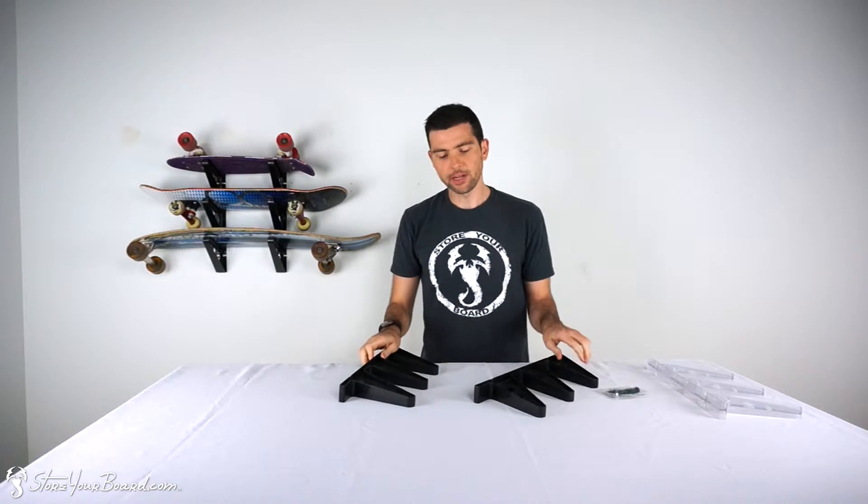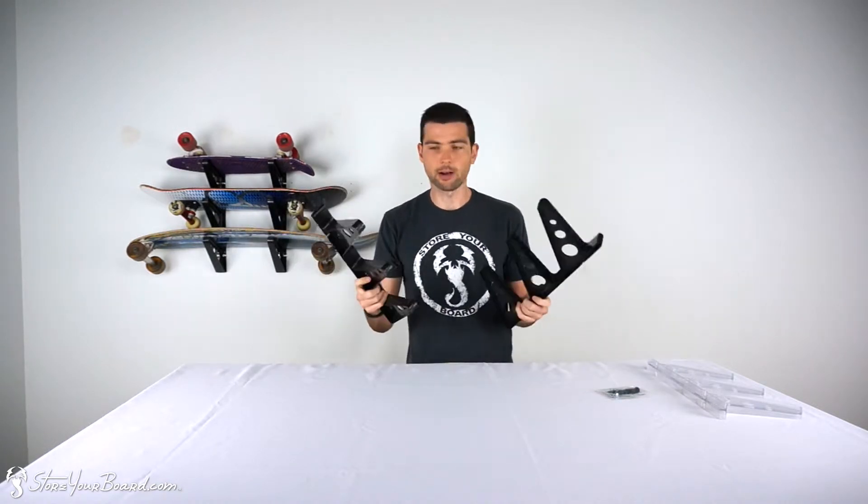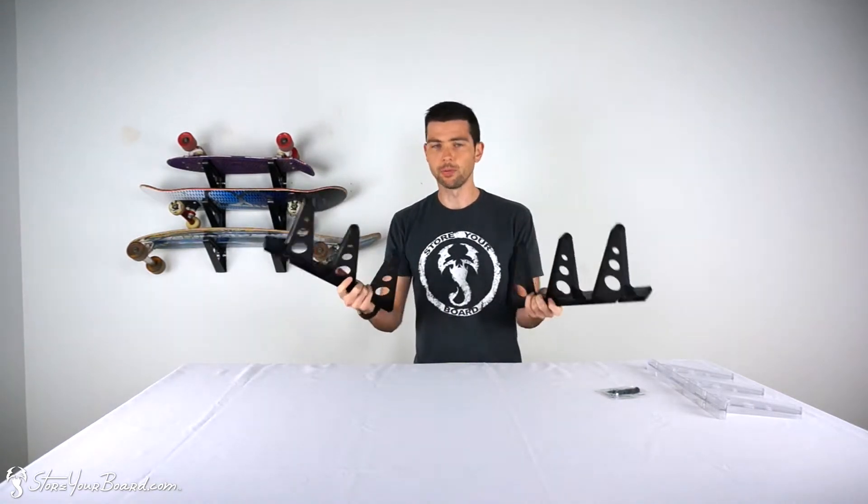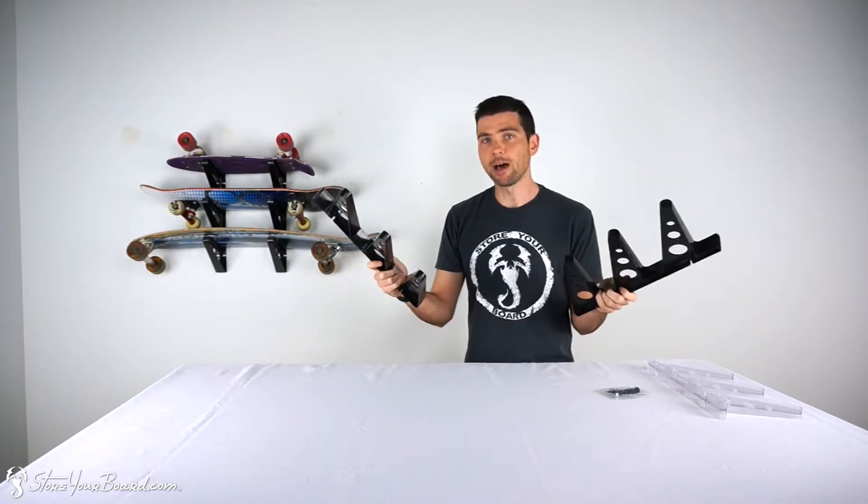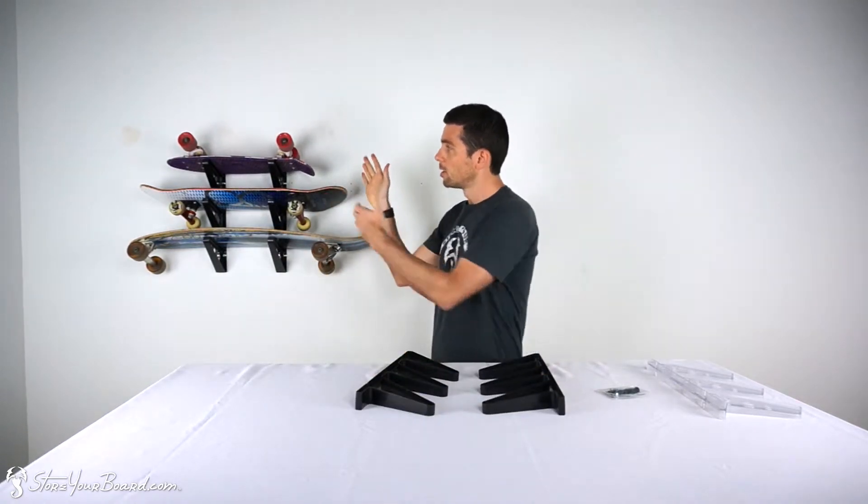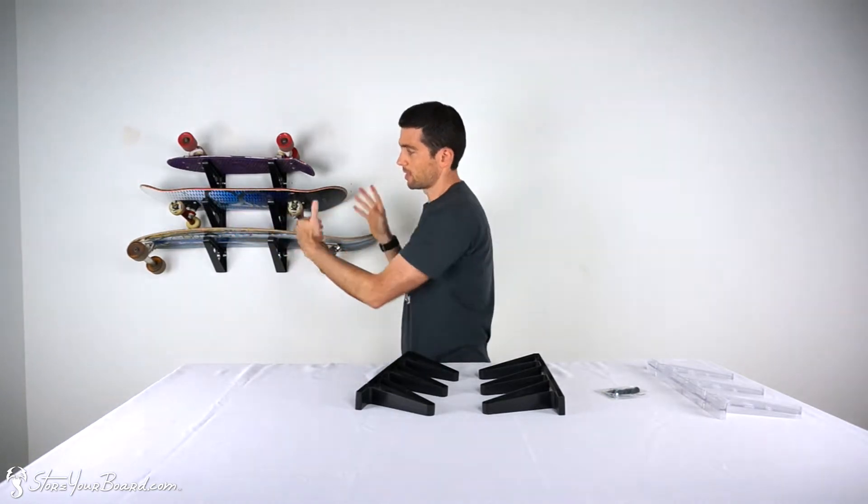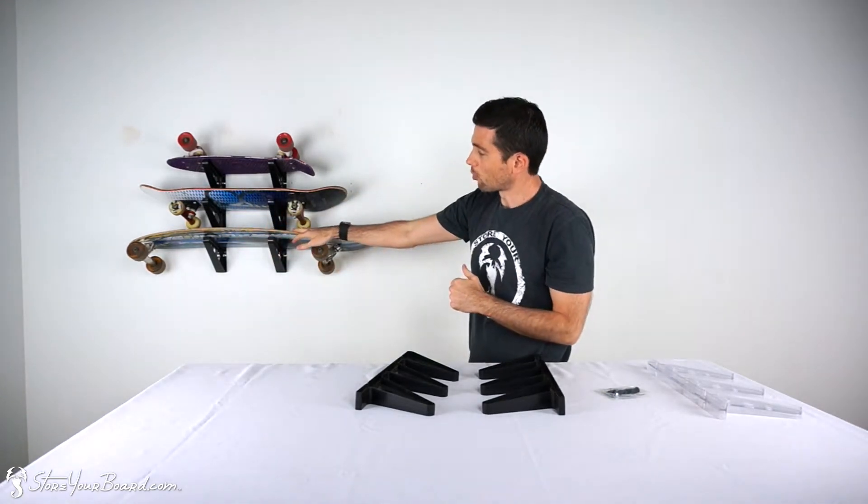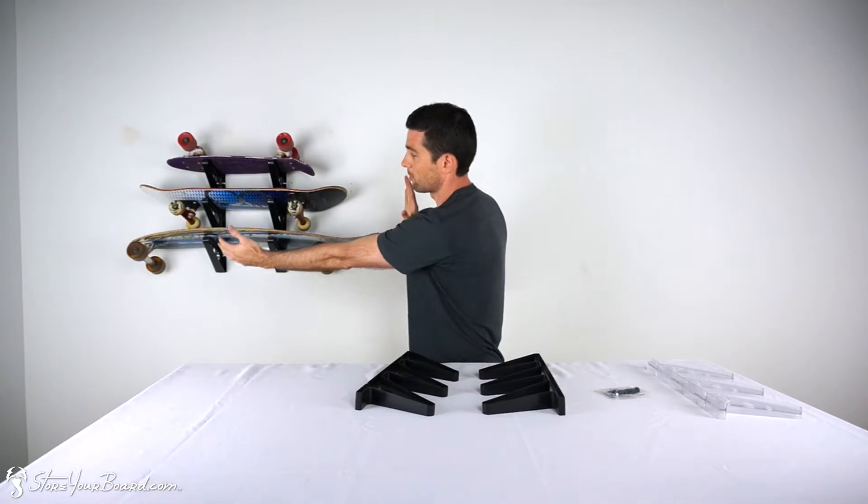So the Trifecta Clear Rack and Black Rack comes with two pieces. You get both of these and they can be mounted at different distances depending on how wide you want them between your trucks, outside your trucks. If you have a longboard like this, if you have three longboards, you can mount a little bit wider.